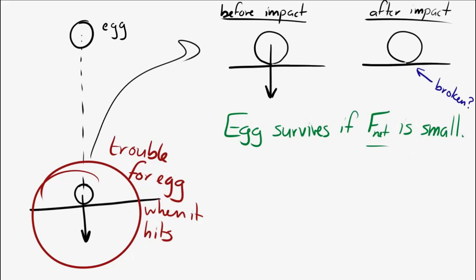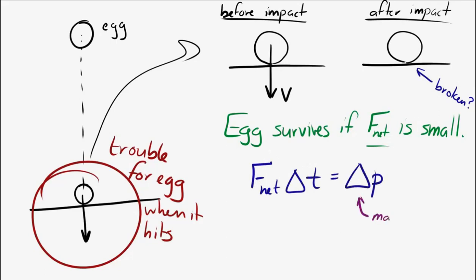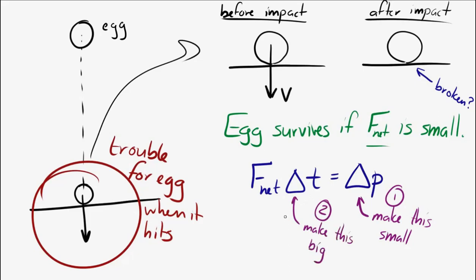Looking at the impulse-momentum theorem, there are two things we can do to keep the force small. One: we could make the change in momentum small. Two: we could make delta t as large as possible. To summarize, to make the force small, you either make delta p small or make delta t large.